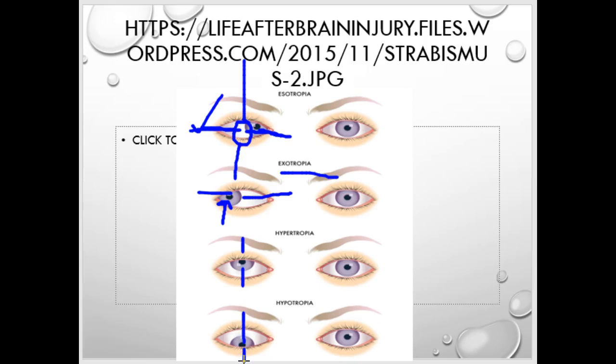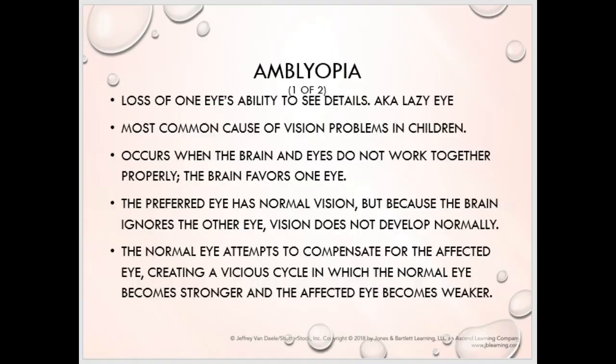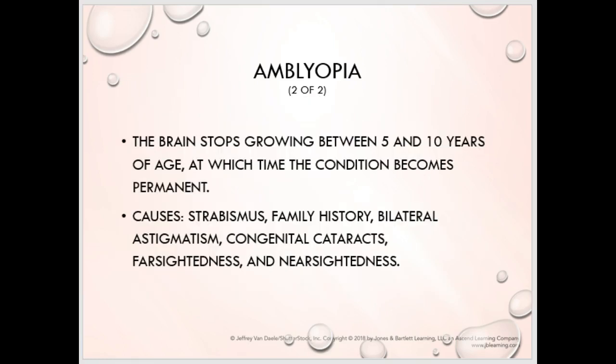Amblyopia is a lazy eye. It's quite often affiliated with strabismus — if a child has strabismus and their eye moves in, the brain starts to turn that eye off because it's not focusing properly. They could also have a visual difference between one eye and the other — a really strong prescription on one side and a weak one on the other, causing the eye to drift. Either way, the brain will start to favor one eye and kind of turn the other off.